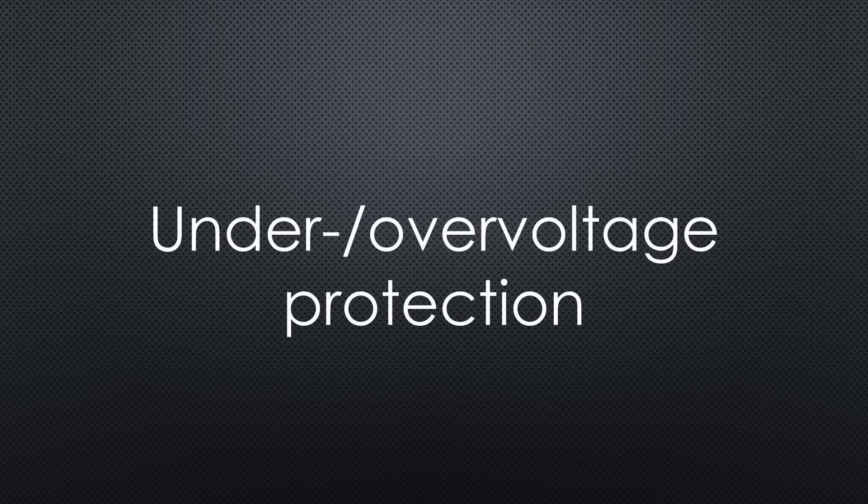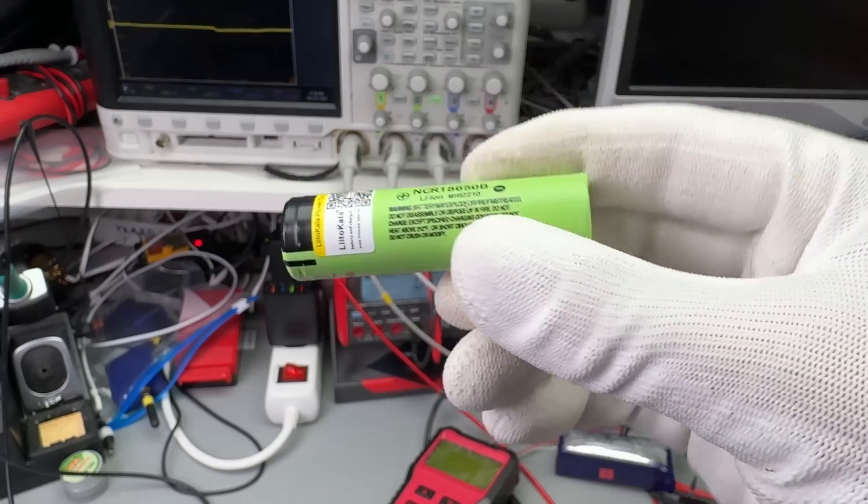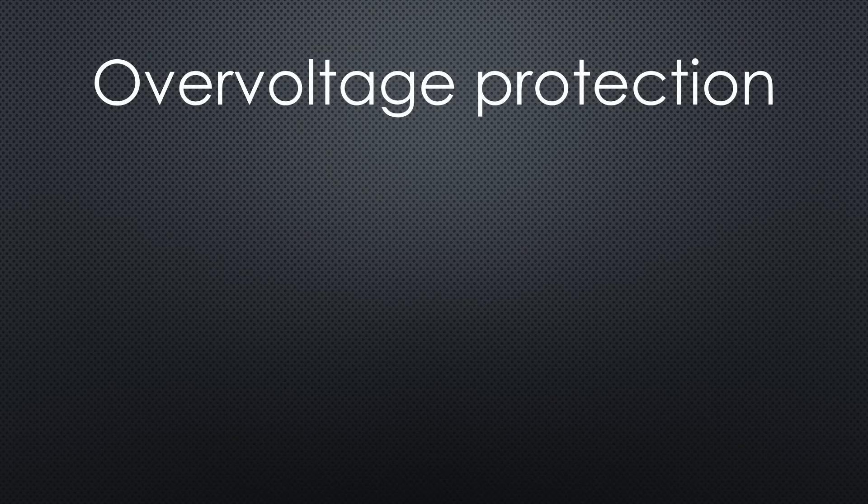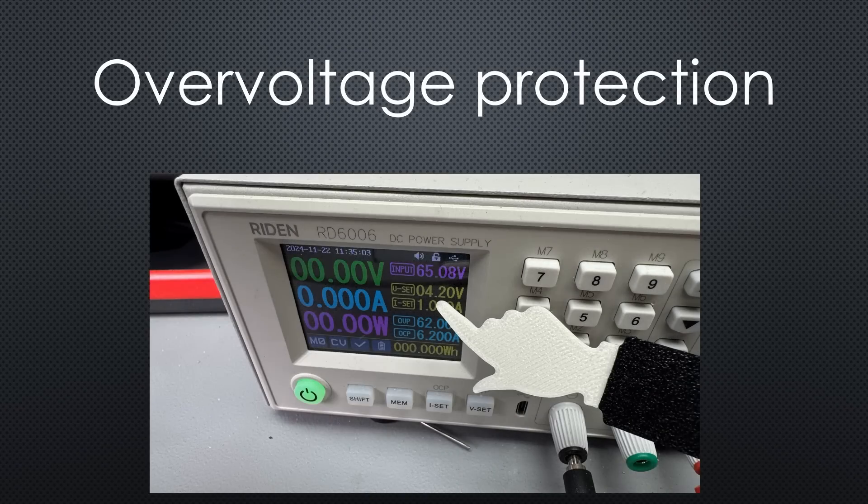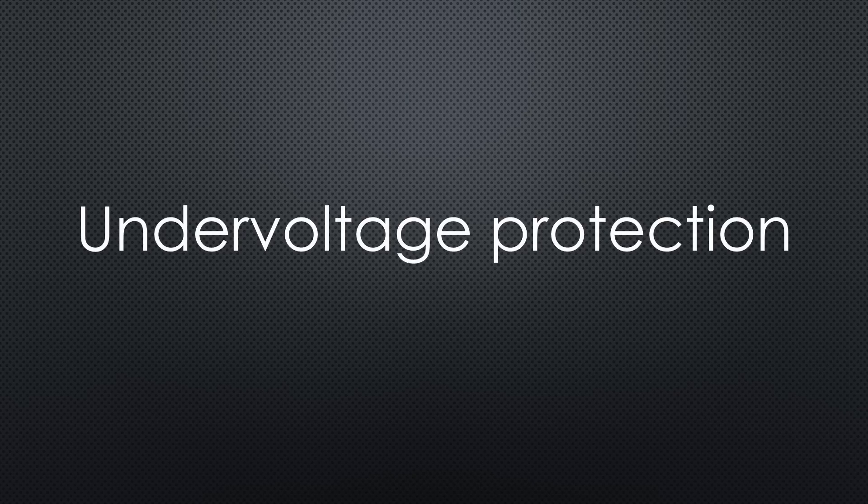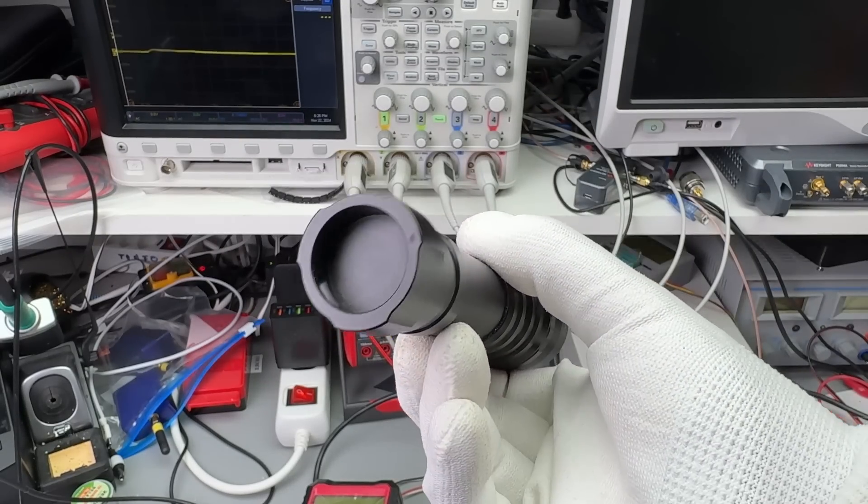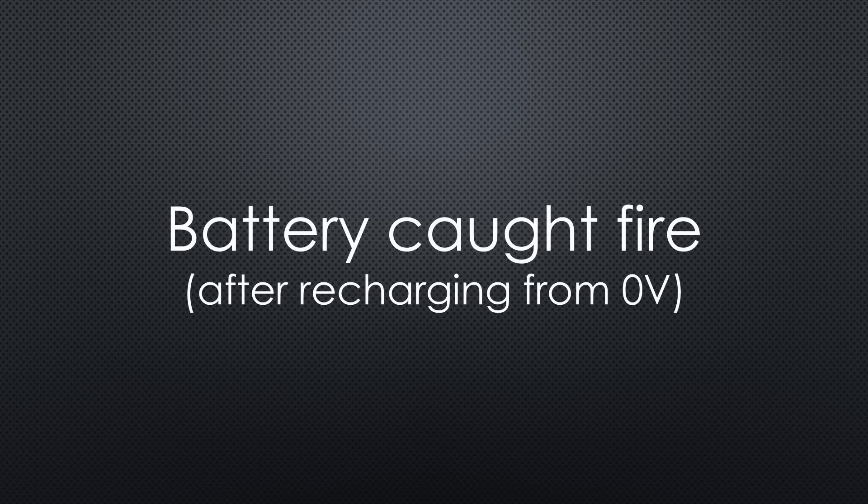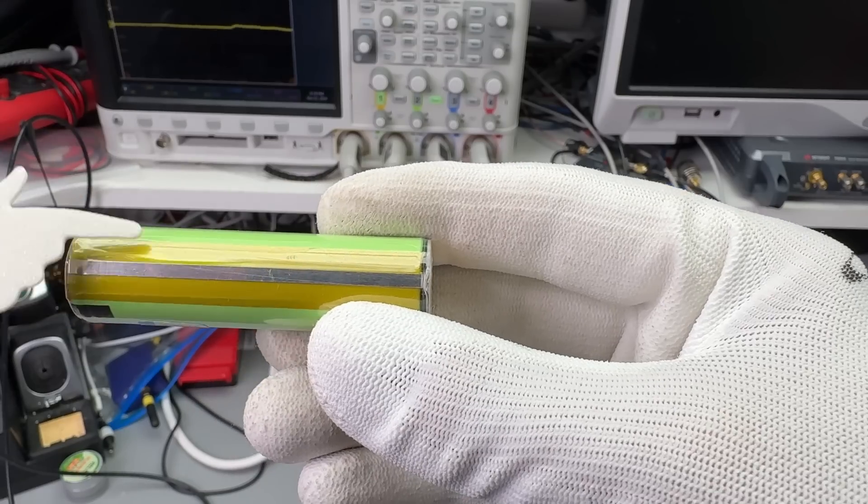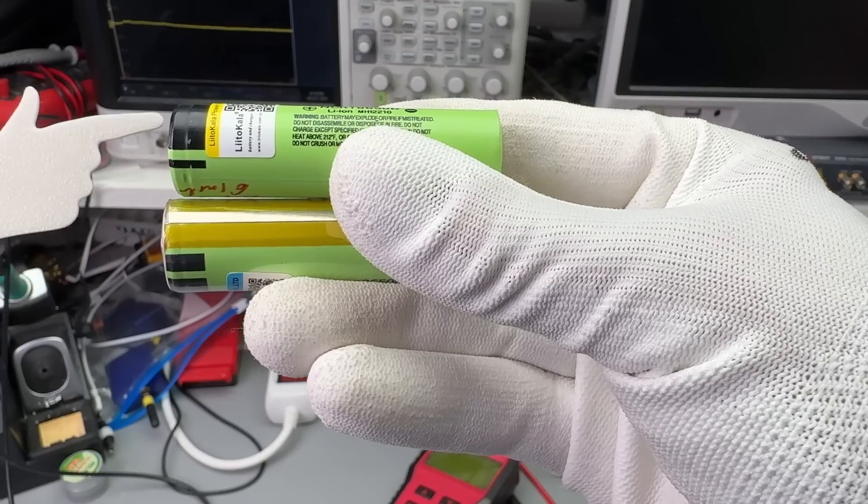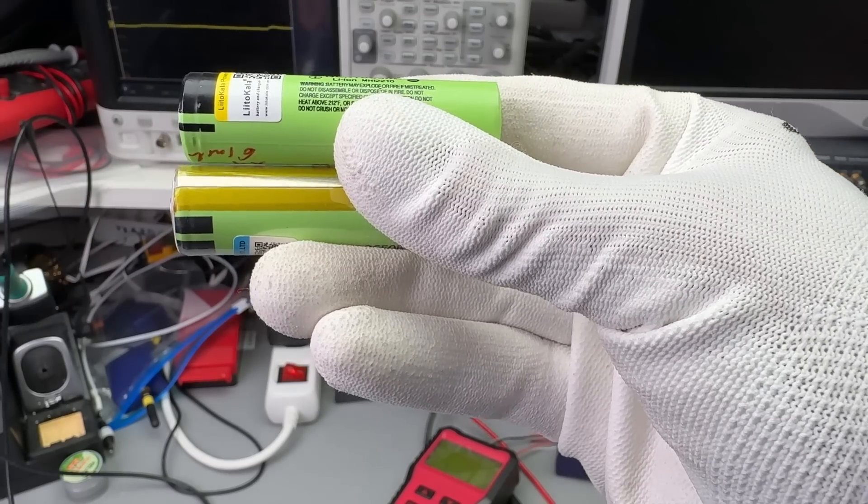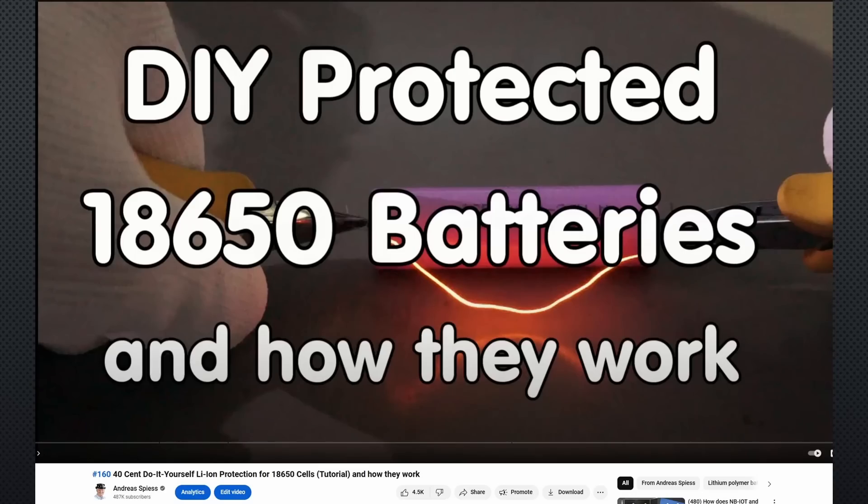Let's move on to over and under voltage protection. Most 18650 batteries lack built-in protection. Preventing over voltage is straightforward with a dedicated charger or setting your lab power supply to the maximum charging voltage of 4.2 volts. However, under voltage protection is trickier. Many devices don't offer it. For example, my torch. I forgot to switch it off a few times, resulting in a completely flat lithium-ion battery. After one of them caught fire during recharging, I started using only protected cells for these situations. Because these are standard cells with an added protection layer, they are longer and do not fit such holders. Watch video number 160 if you want to add protection to your unprotected cells.